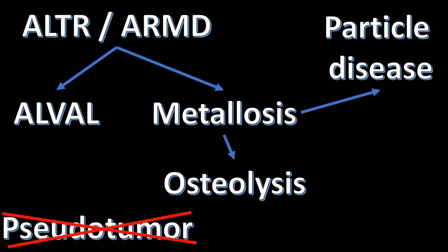So this is my approach: if I have an MRI with any abnormality around a metal-on-metal hip arthroplasty that is out of the ordinary — whether cystic or solid, with or without synovitis — I call that ALTR or ARMD. I do not use the term ALVAL in my reports since it's a histological diagnosis. If there are prominent susceptibility artifacts within or around the hip, I also use the term metallosis. Metallosis can also involve the bone with osteolysis, and you can have both. The term particle disease I use basically only in non-metal-on-metal hip arthroplasty.